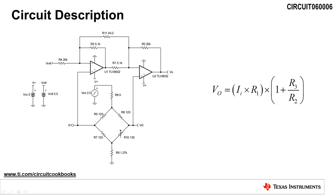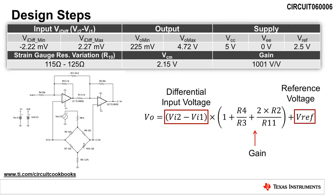In order to detect both positive and negative differential bridge voltages, the output, VO, must be biased to mid-supply using the reference voltage, Vref. The equation for VO is the transfer function of this circuit.